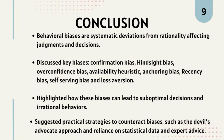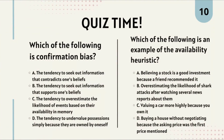Quiz time. Question 1: Which of the following is confirmation bias? Option A: the tendency to seek out information that contradicts one's beliefs. Option B: the tendency to seek out information that supports one's beliefs. Option C: the tendency to overestimate the likelihood of events based on their availability in memory. Option D: the tendency to undervalue possessions simply because they are owned by oneself. The correct answer is Option B — the tendency to seek out information that supports one's beliefs.